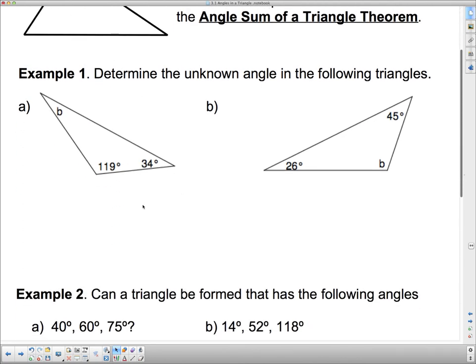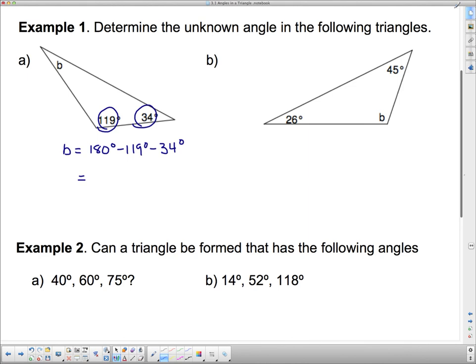So in this triangle right here, we already know that it has 119 degrees in that corner and 34 degrees in that corner. So the angle sum of a triangle theorem says that to find b, all I really need to do is take 180 degrees, which is in the triangle, and subtract off the two corners that I already know. And that will leave us with 27 degrees.